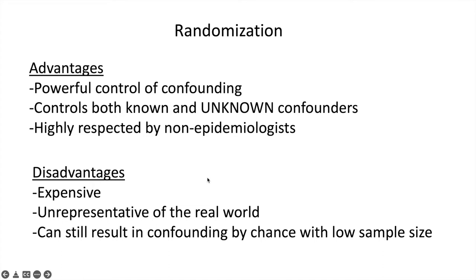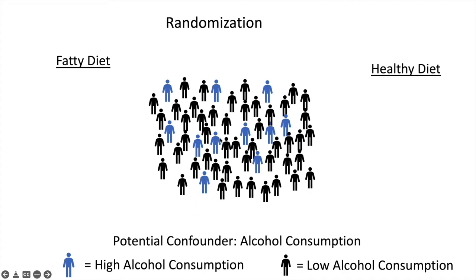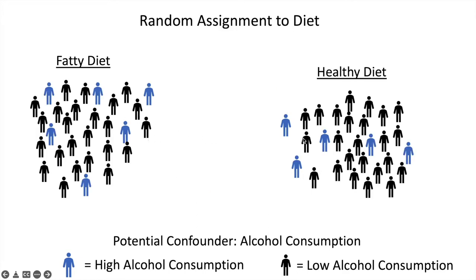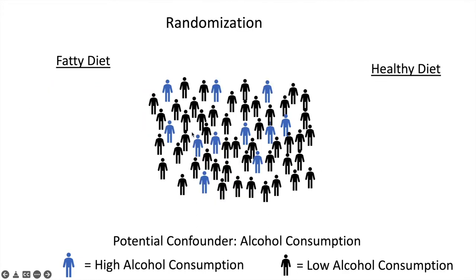Disadvantages are that it's expensive and unrepresentative of the real world — people make choices and self-assign themselves to all kinds of exposures. There are several exposures you can't assign to people; if it's smoking, you can't tell people to smoke and force them to for a study. Also, with a low sample size, it's still possible you could have more blue people on one side just by mere chance through randomization. The larger your sample size is, the less likely that will happen.